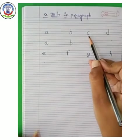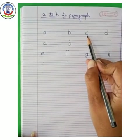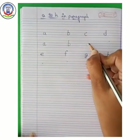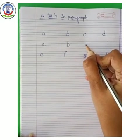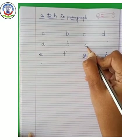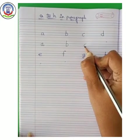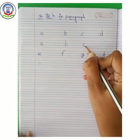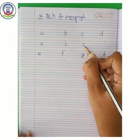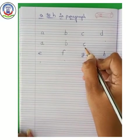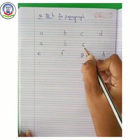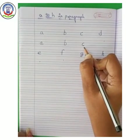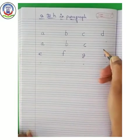Now, next letter — C. Make a curve in between blue line. Yes, C. C says C — Cat.